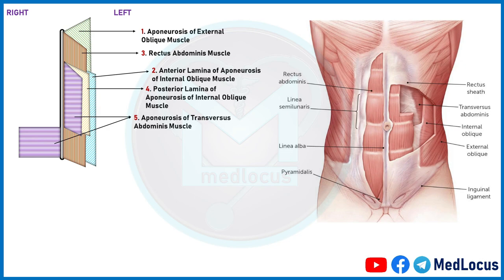In number one, the anterior-most part, we have the aponeurosis of the external oblique muscle. In number two, we have the anterior lamina of the aponeurosis of the internal oblique muscle. In number three, we have the rectus abdominis muscle. In number four, we have the posterior lamina of the aponeurosis of the internal oblique muscle. And in number five, we have the aponeurosis of the transversus abdominis muscle.